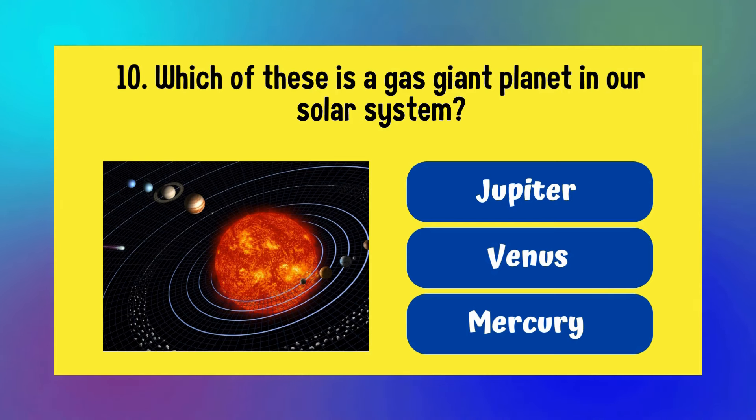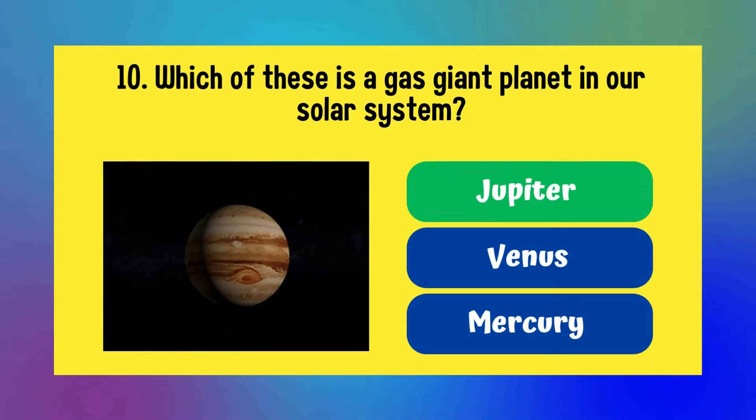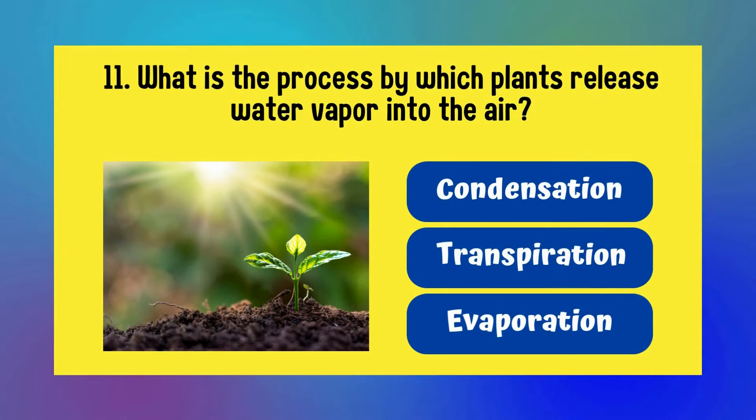Which of these is a gas giant planet in our solar system? Jupiter, Venus, or Mercury? It is Jupiter. What is the process by which plants release water vapor into the air? Condensation, transpiration, or evaporation? Answer is transpiration.